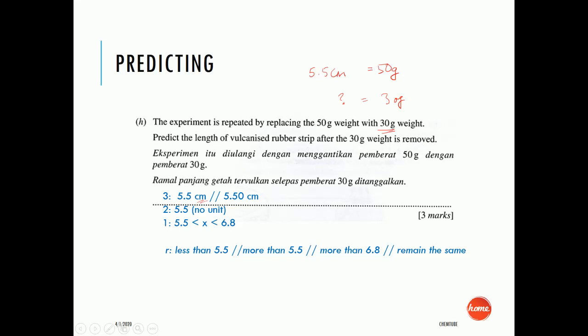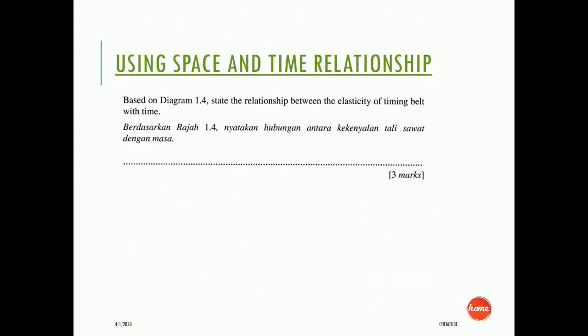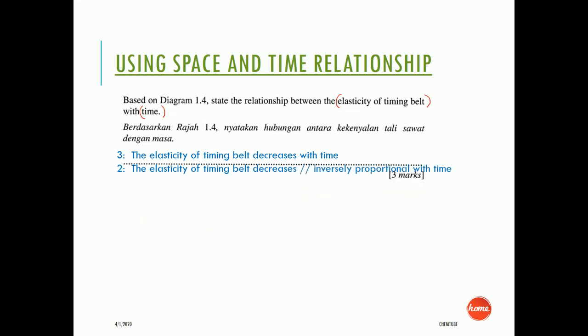A timing belt is used in a car engine and its elasticity affects the smoothness of the engine. Based on the graph, state the relationship between the elasticity of the timing belt and time. Score 3: 'The elasticity of the timing belt decreases with time.' Score 2: 'The elasticity of the timing belt decreases' without mentioning time, or 'inversely proportional with time.' Score 1: 'The elasticity of the timing belt changes.'